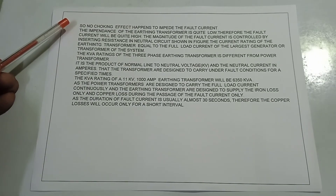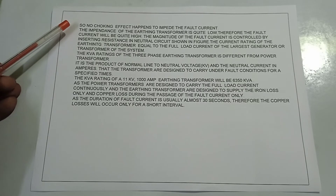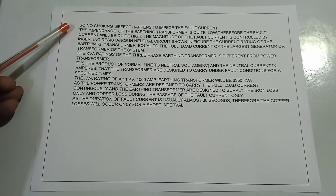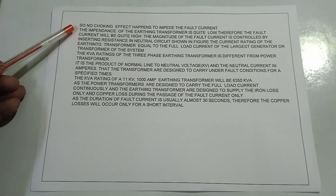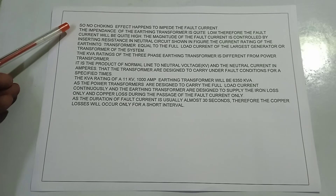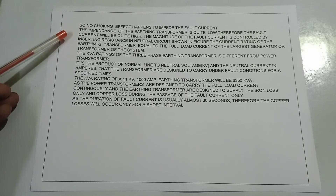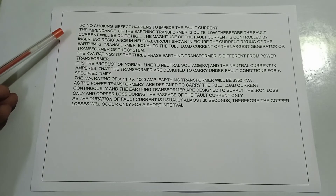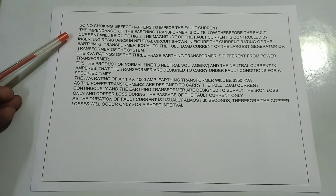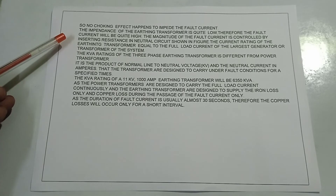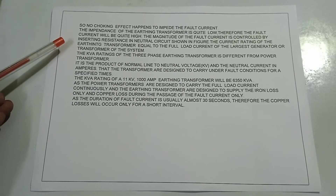No choking effect happens to impede the fault current. The impedance of the earthing transformer is quite low, therefore the fault current will be quite high. The magnitude of the fault current is controlled by inserting a resistance in the neutral circuit, as shown in the figure.